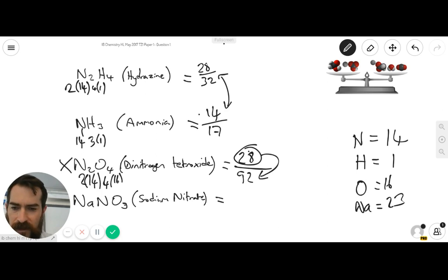Then the next compound down here, ionic molecule I should say, we have 23 for the sodium, 14 for the nitrogen, and 3 times 16 for the oxygen. So that gives you a total mass for that molecule of 85. And then for the nitrogen, there's only one of them, so it's 14 over 85. So clearly, there's not a lot of contribution to the overall mass by nitrogen. So we can also eliminate that option there.